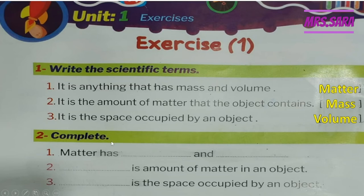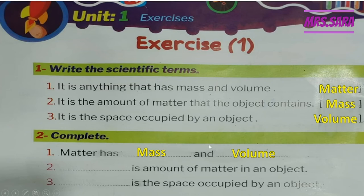Question number two: complete the sentences. Matter has what and what? Matter has mass and volume. So matter is everything around us that has mass and volume. Number two — what is the amount of matter in an object? The magic word 'amount of matter' refers to mass. Number three — what is the space occupied by an object? When you see the magic word 'space,' we're talking about volume.